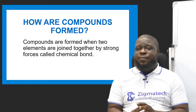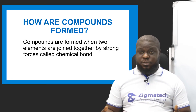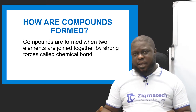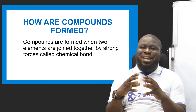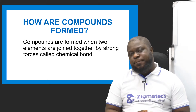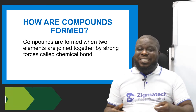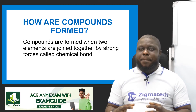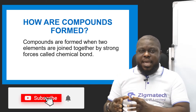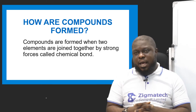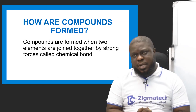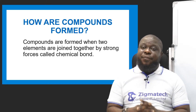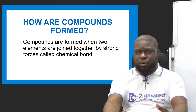How are compounds formed? Compounds are formed by the breakage of bonds — they share their electron pairs among themselves. Compounds are formed when two elements are joined together by strong forces called a chemical bond. This force is an attraction that attracts electrons from element A and element B to join together. When they join together, they form a chemical bond, irrespective of the kind of compound, and this bond brings about the formation of a compound.